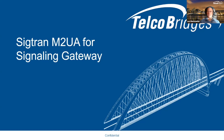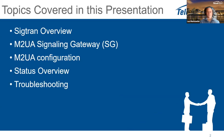This session focuses specifically on M2UA. SIGTRAN is a global specification for signaling over IP and has many different types of signaling. Here we concentrate on M2UA because this is what we use with the MetaSwitch Media Gateway Controller. The agenda covers a SIGTRAN overview, the M2UA signaling gateway specifically for this application, configuration of the signaling relay, status, and troubleshooting.